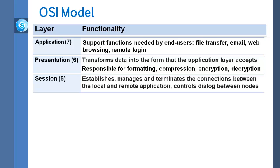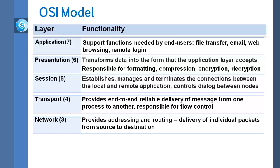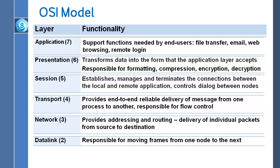Layer 5 is the session layer. It establishes, manages, and terminates the connections between the local and remote application, and controls dialogue between nodes. The next layer is layer 4, which is the transport layer. It provides end-to-end reliable delivery of messages from one process to another. Layer 3 is the network layer. It provides addressing and routing, and delivery of individual packets from source to destination.